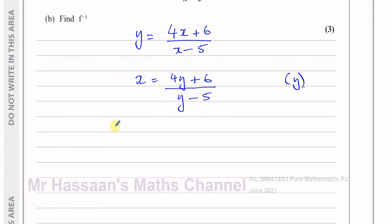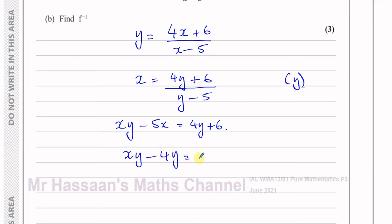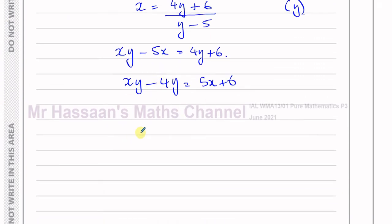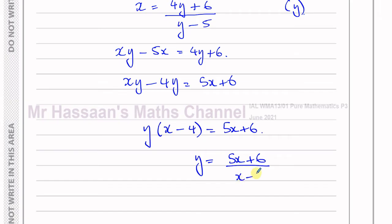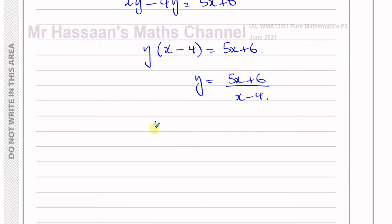Multiply both sides by (y − 5) to clear the fraction: x(y − 5) = 4y + 6. Bring the y terms together: xy − 4y = 5x + 6. Factor out y: y(x − 4) = 5x + 6. Divide both sides by (x − 4). So the inverse function is f⁻¹(x) = (5x + 6)/(x − 4).